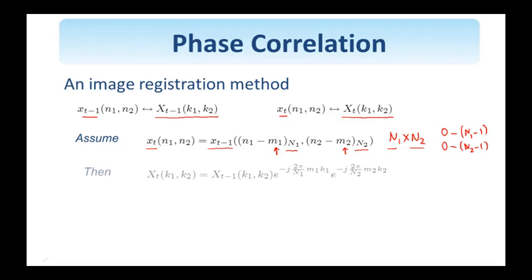Then, based on the shifting property of the discrete Fourier transform, we know that the two images are related in the frequency domain as shown here. So the DFT of x of t equals the DFT of x of t minus 1, and the circular shifts in the spatial domain give rise to this phase component here, these linear phase components that multiply the spectrum. So the two images have the same magnitude of the DFTs, but in the phase of the second one, I have added this linear phase component.